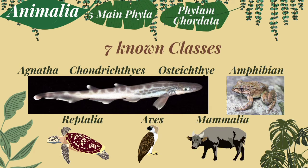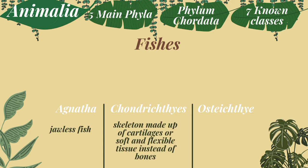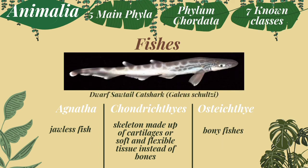The classes Agnatha, Chondrichthyes, and Osteichthyes are fishes. Agnatha are the jawless fishes. Chondrichthyes are the fishes with skeletons made up of cartilage — soft and flexible tissues — instead of bones. And Osteichthyes are the bony fishes. An example is the dwarf sawtail catshark.